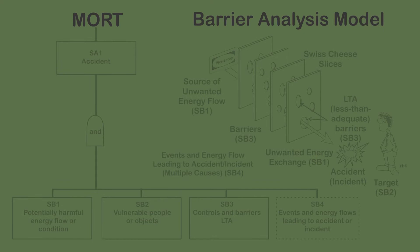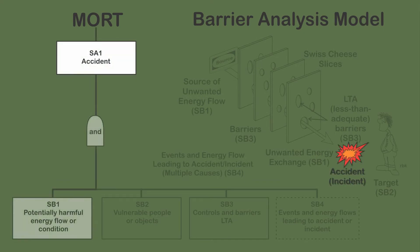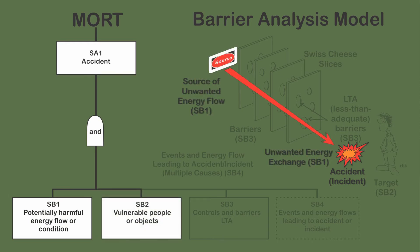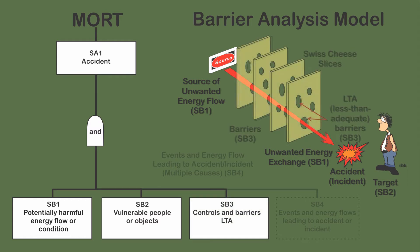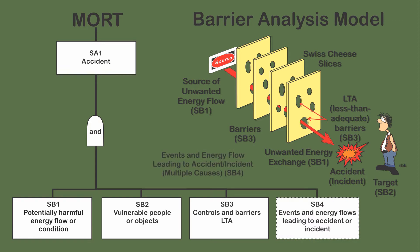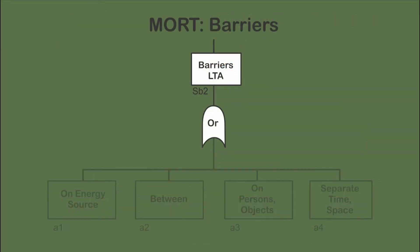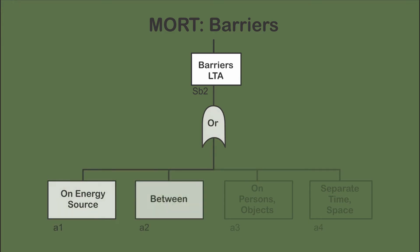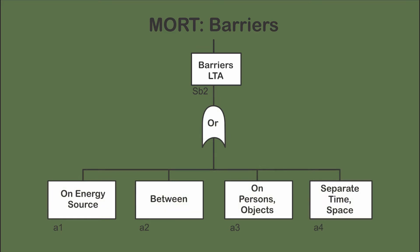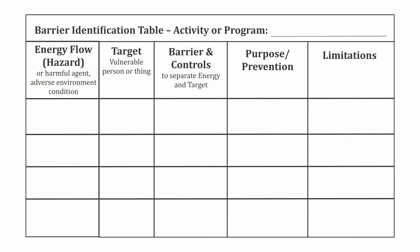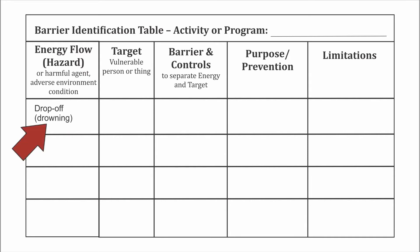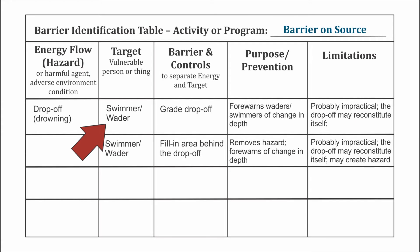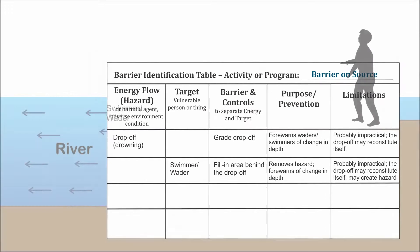The incident is useful in discussing barrier analysis from the perspective of the park. Barrier analysis is the process of placing barriers between the source of an unwanted energy transfer and a potential target. The barriers are less than adequate, meaning they are not one hundred percent effective. In the MORT analysis, there are four types of barriers: barriers on the source of the energy transfer, barriers between the energy source and the target, barriers on the target, and barriers that separate by time or space. The worksheet is useful in identifying and prioritizing potential barriers. In this example, the source of the unwanted energy transfer is the drop-off, and the unwanted energy transfer results in drowning. The target is swimmers and waders.